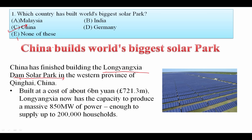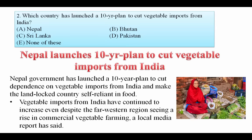You need to remember two things: first, China is the country, and second, the name of the solar park is Longyangxia Dam Solar Park. Which country has launched a 10-year plan to cut vegetable imports from India? Nepal government has launched a 10-year plan to cut dependence on vegetable imports from India and make the landlocked country self-reliant in food. Your answer is Nepal.